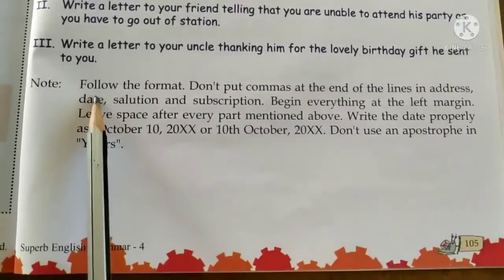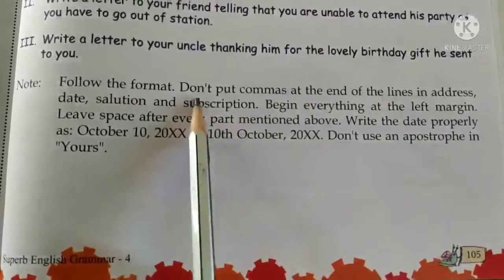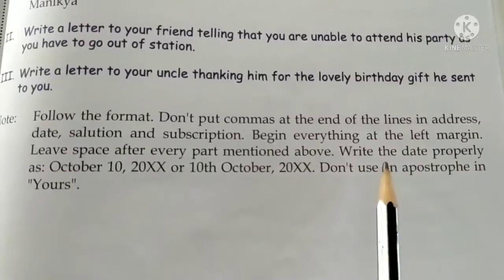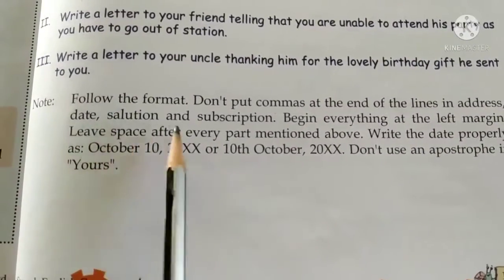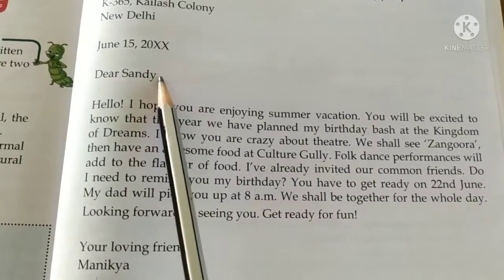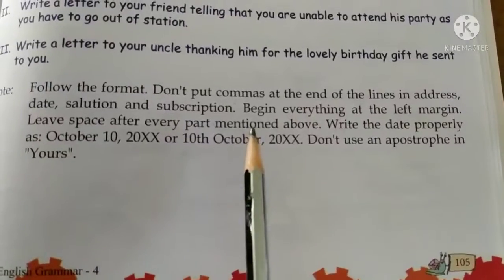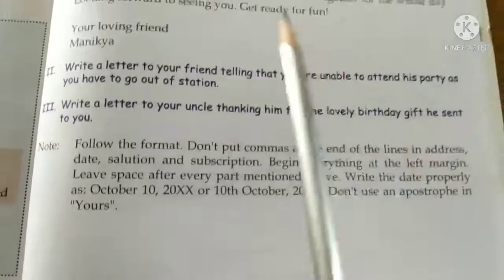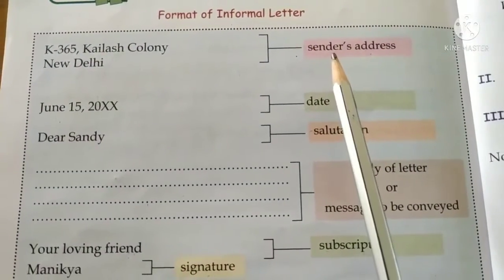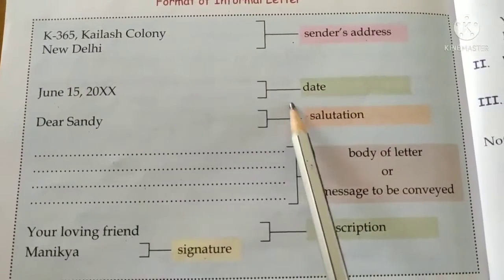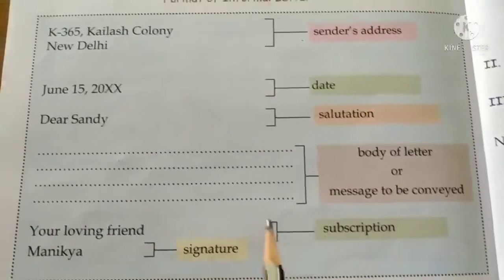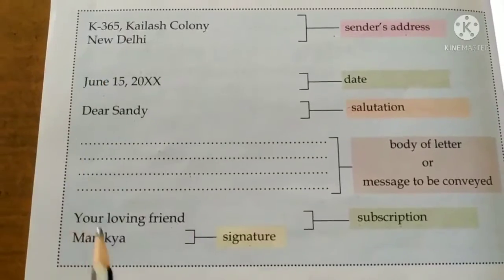We have to remember some important points while writing the letter. We have to follow the format. Do not put commas at the end of the lines in addresses — after the colony or the place, you will not put any comma. No comma after the date, salutation, and subscription. Begin everything at the left margin. Leave space after every part mentioned: after sender's address, after date, after salutation, after the body of the letter, and for subscription and signature too.